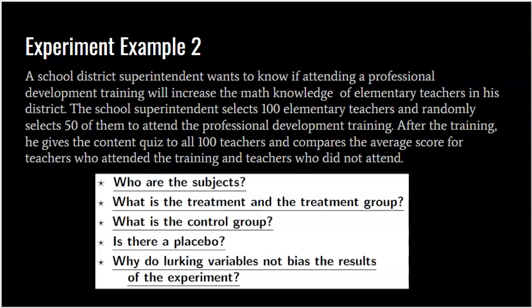Some people are going to know they're not getting anything. But if the superintendent behind closed doors selects the 100 teachers and randomly assigns 50 to professional development, he only tells those 50 they're going. He doesn't even tell the other 50 they were picked. Then he just brings everyone into the auditorium and has them take a math content quiz without revealing there was an experiment — that in a sense is blinding them. However, they cannot be officially blind because one group knows they're getting professional development and the other isn't. You have to be careful, but the nature of the experiment should still work.